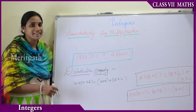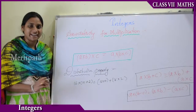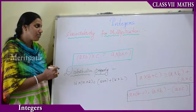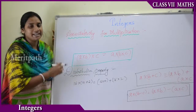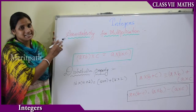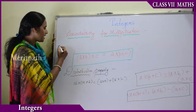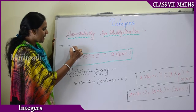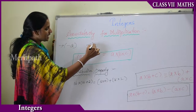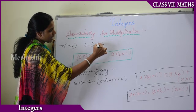Let us deal with the associative property of multiplication. We have discussed it in addition also, and in the same way it applies to multiplication. Let us take one example such as minus 2, minus 3, and plus 4.